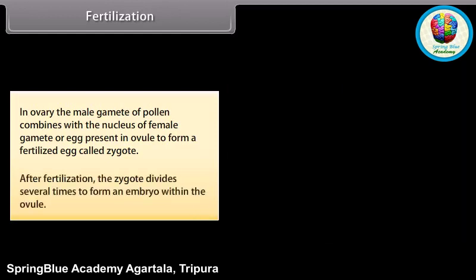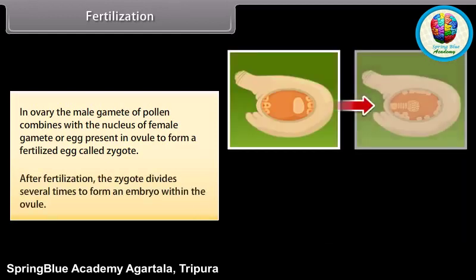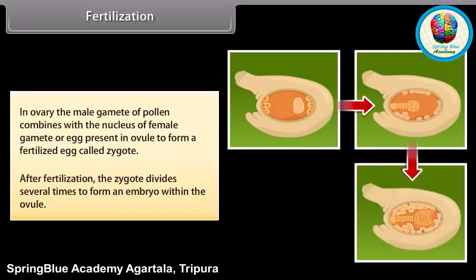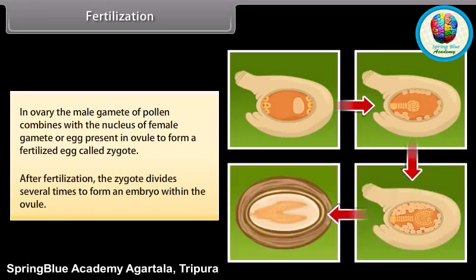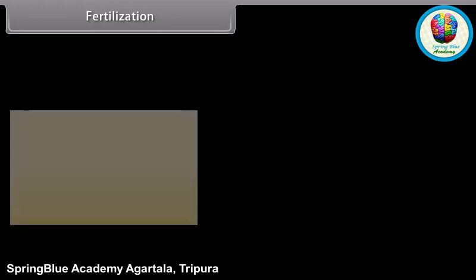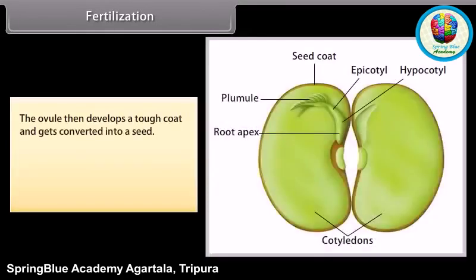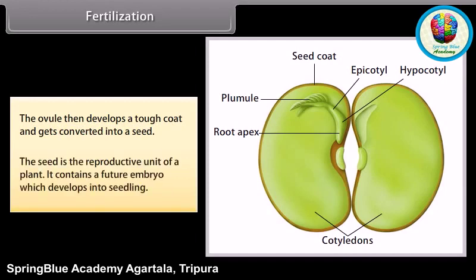After fertilization, the zygote divides several times to form an embryo within the ovule. The ovule then develops a tough coat and gets converted into a seed. The seed is the reproductive unit of a plant; it contains a future embryo which develops into a seedling.